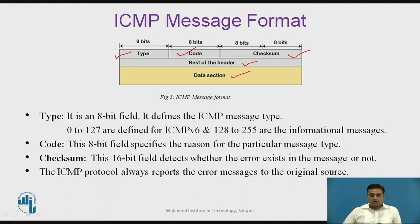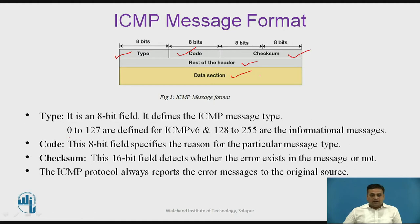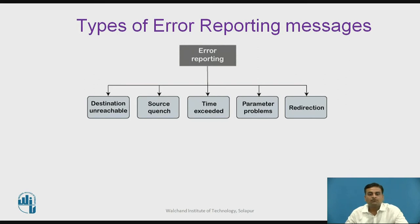The data section contains the IP header and the first 8 bytes of data from the IP datagram for which the ICMP message is being generated. ICMP always reports error messages to the original source. The ICMP message is not directly passed to the lower layer; it is encapsulated in an IP datagram and then passed to the lower layer.